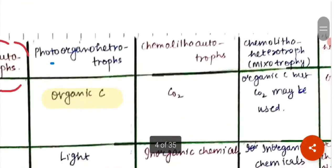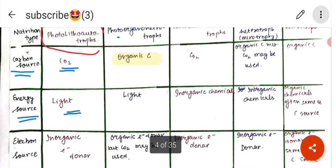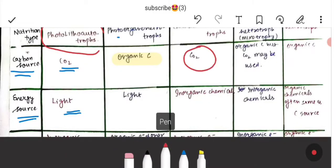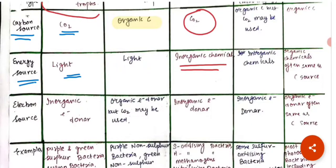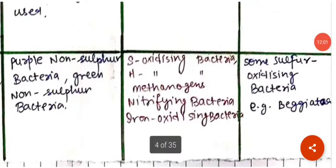The third category is chemolithoautotrophs. They use CO₂ as the carbon source, inorganic chemicals as the energy source, and inorganic electron donors as the electron source. Examples include sulfur-oxidizing bacteria, hydrogen-oxidizing bacteria, methanogens, nitrifying bacteria, and iron-oxidizing bacteria.